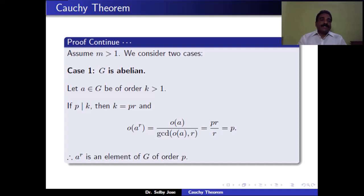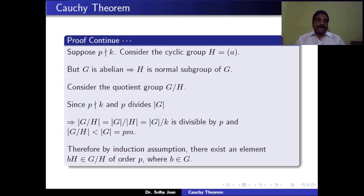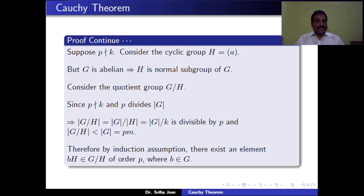If P does not divide K, consider the cyclic group H generated by A. Since G is abelian, H is a normal subgroup, so we consider the quotient group G/H. Since P does not divide K and P divides |G|, we get P divides |G/H|, which equals |G|/K. Note that |G/H| < |G|. Therefore, by the induction assumption, we can find an element BH in G/H of order P.